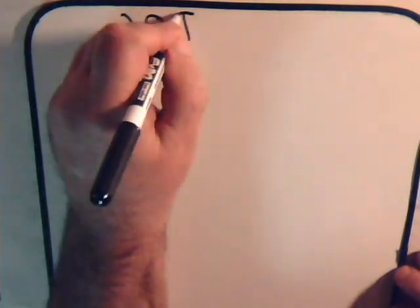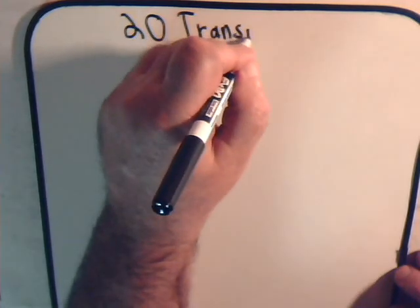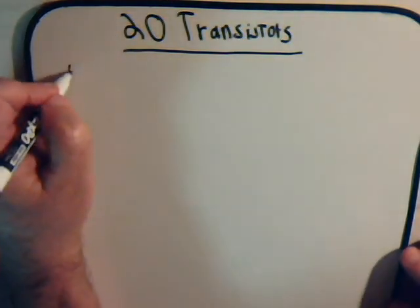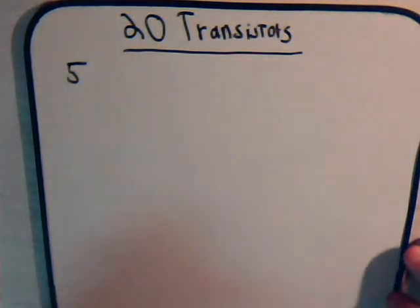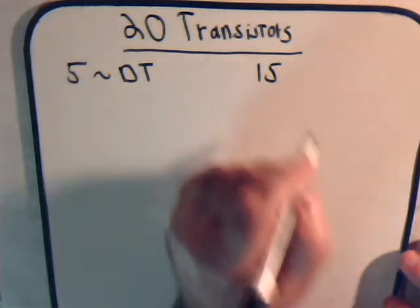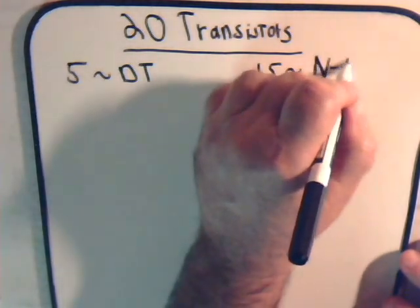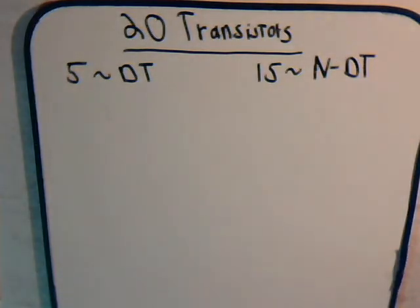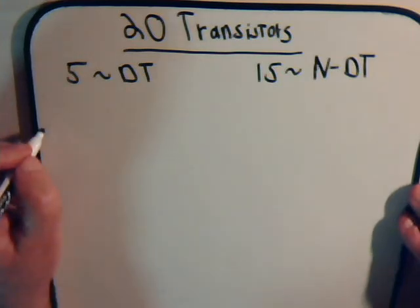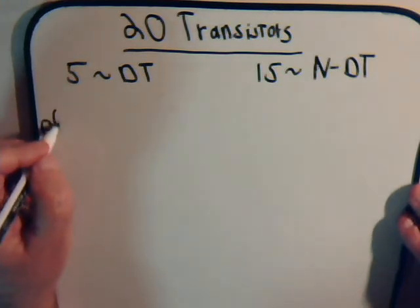So here we have again twenty transistors, five of which are defective. Now we want to consider: if we select three of them, what is the probability for each case?